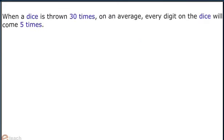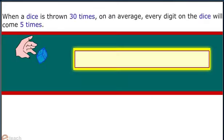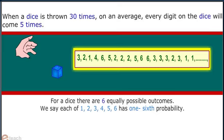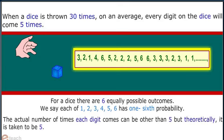When a dice is thrown 30 times, then on average every digit on the dice will come 5 times. As you can see from the visual, for a dice there are 6 equally possible outcomes. We say each of 1, 2, 3, 4, 5, and 6 has 1/6 probability. The actual number of times each digit comes can be other than 5, but theoretically it is taken to be 5.